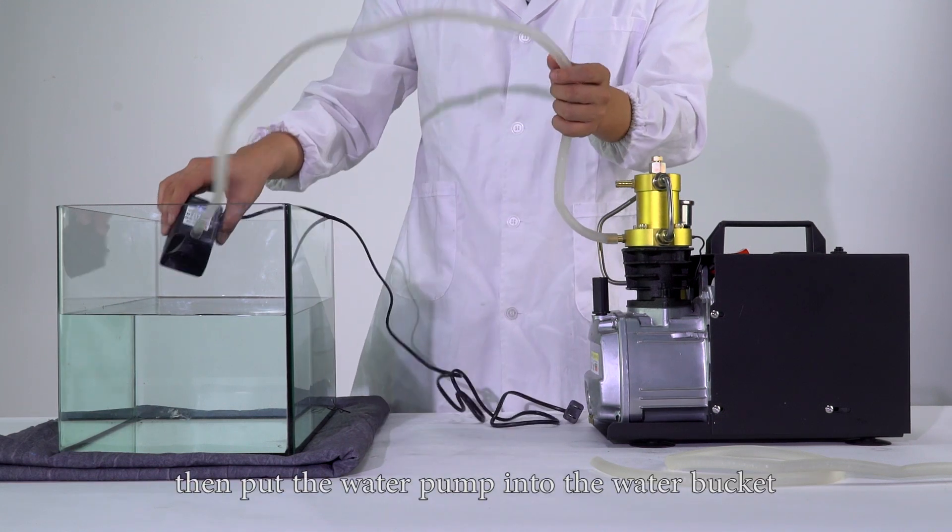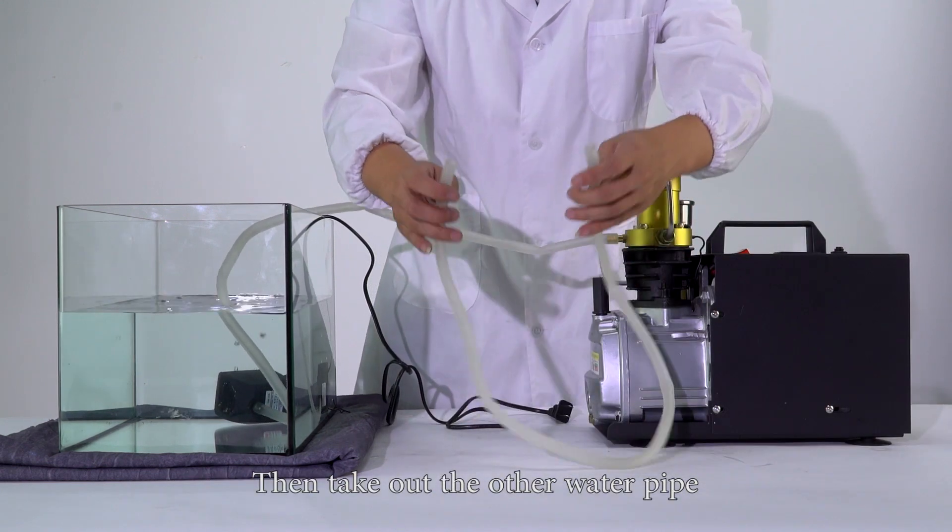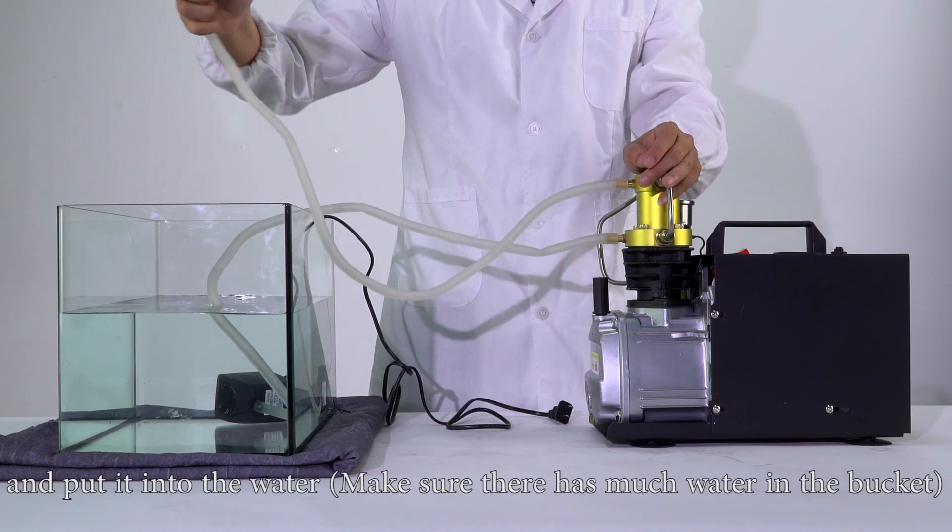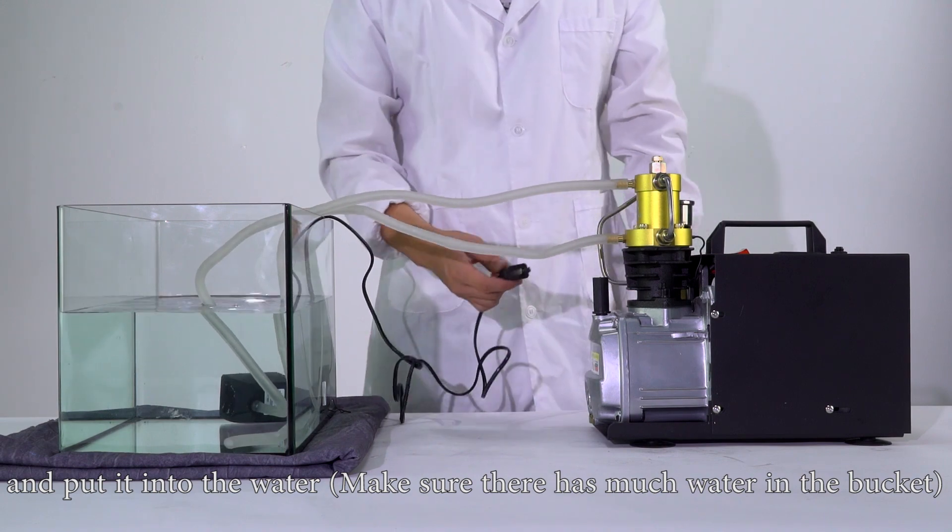Then put the water pump into the water bucket. Then take out the other water pipe to connect the water outlet in the compressor head and put it into the water. Make sure there is enough water in the bucket.